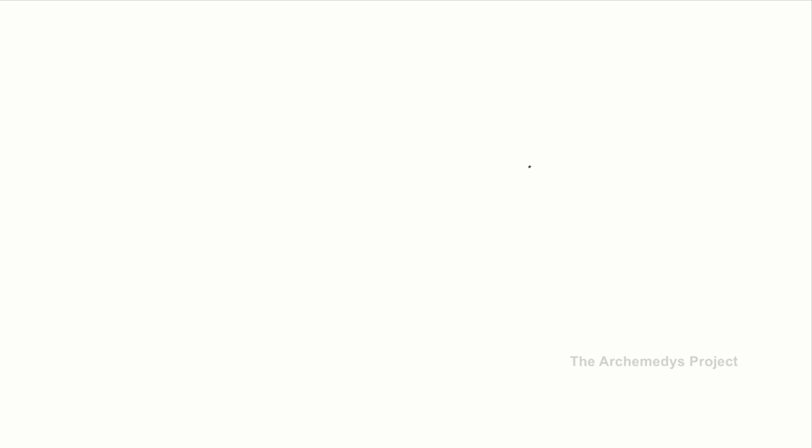Always remember the thumb rule: while going vertical, an eight-degree slope or one foot in every 10 feet is about the limit when considering building economically on hillsides. Soil also helps us understand the extent of plantation, water level, and water seepage.